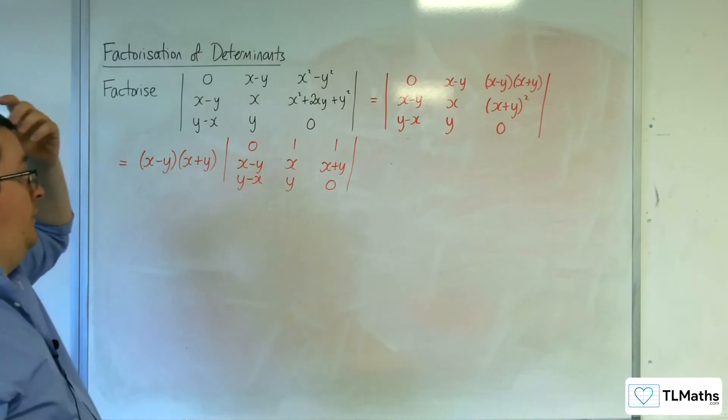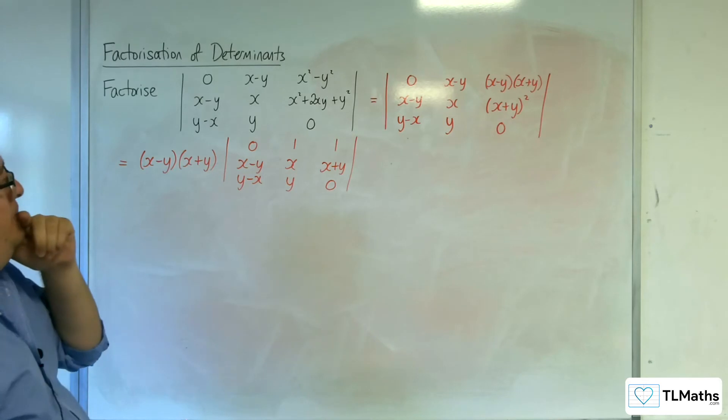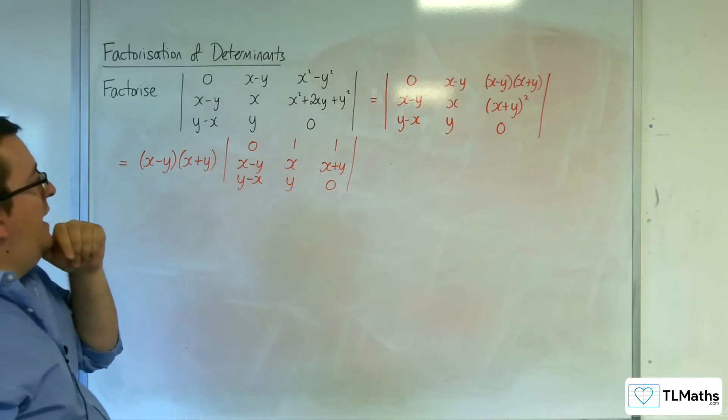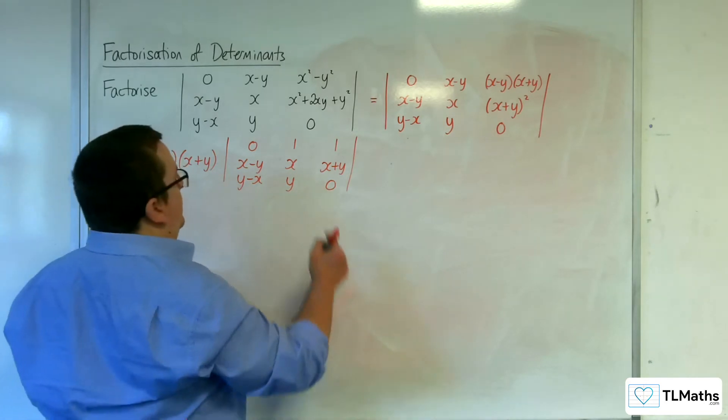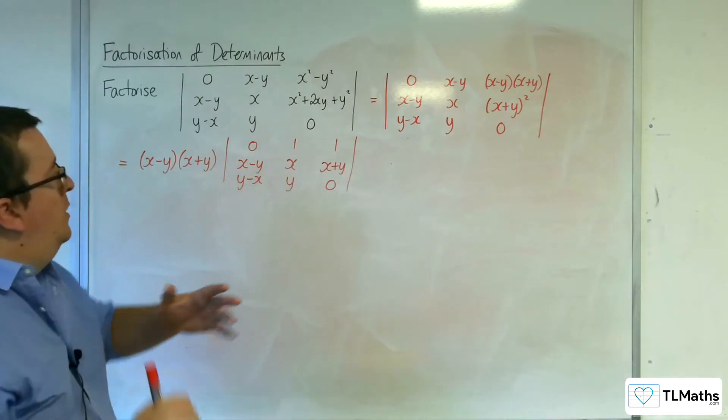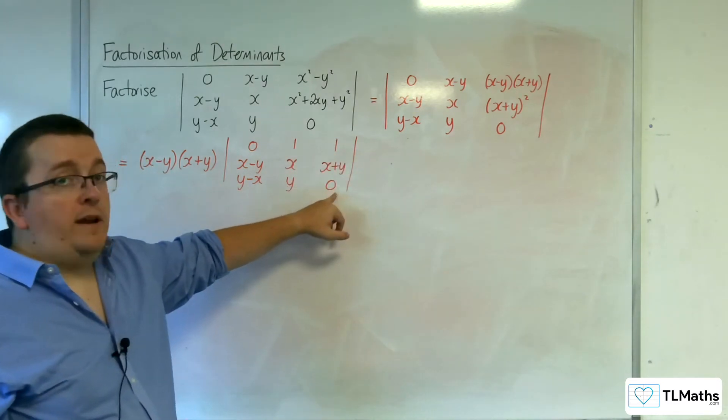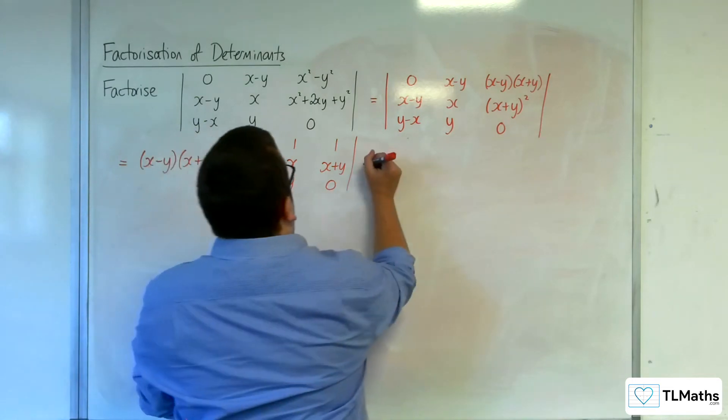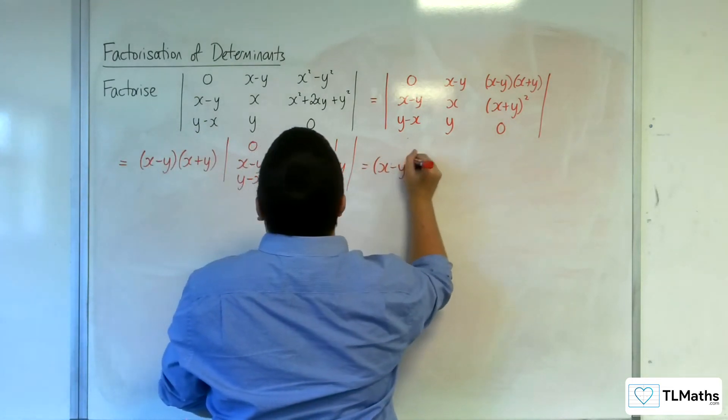So, next thing. Let's get rid of this 1 here. So what I'll do is I'll do column 3, take away column 2. So I'll have the (x-y), (x+y) on the outside.